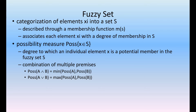It represents possibility measures: poss(x belongs to X) — that is, the degree to which an individual element x is a potential member in the fuzzy set. The possibility of A AND B is the minimum of possibility(A) and possibility(B). The possibility of A OR B is the maximum of possibility(A) and possibility(B).